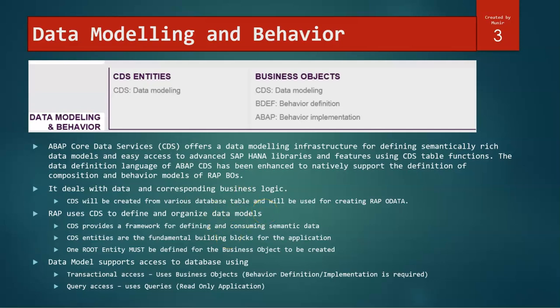With CDS modeling we define a business object. Now a business object is a hierarchy that we look at going ahead. It's the building block using various CDS entities, out of which one root entity must be defined for any business object, and that will be the starting point of the RAP OData that we are creating. Database models that are currently supported are the transactional access, where you define a behavior definition and implementation on the business object, or the query access, which is just a read application. No CUD operations are required.